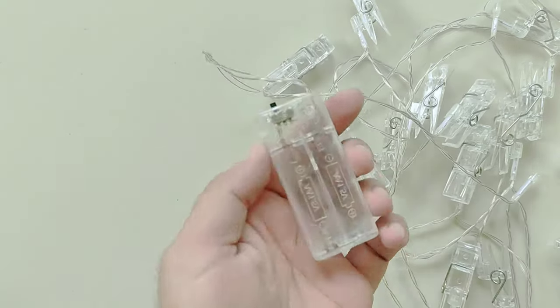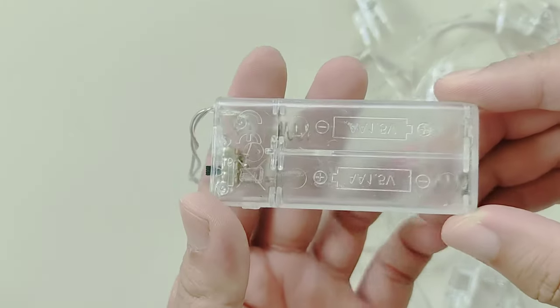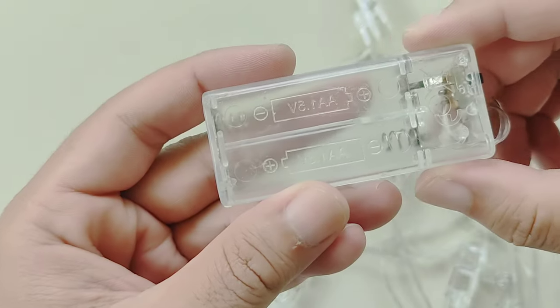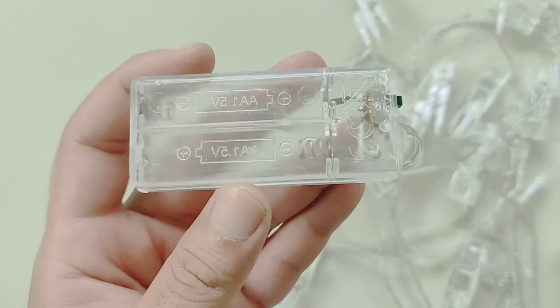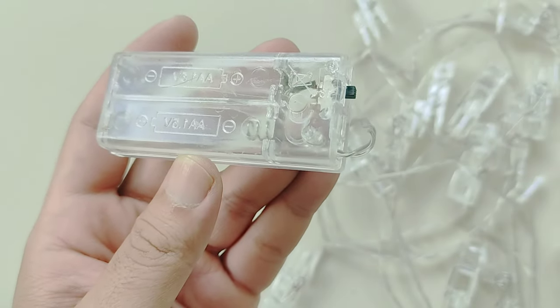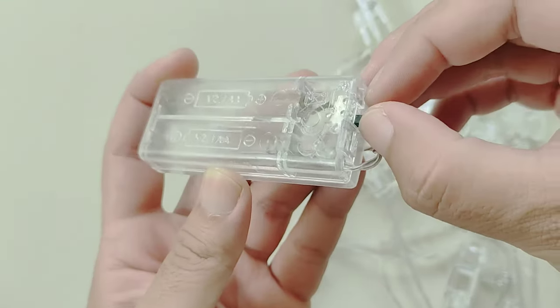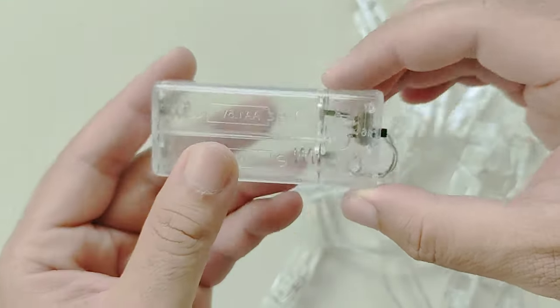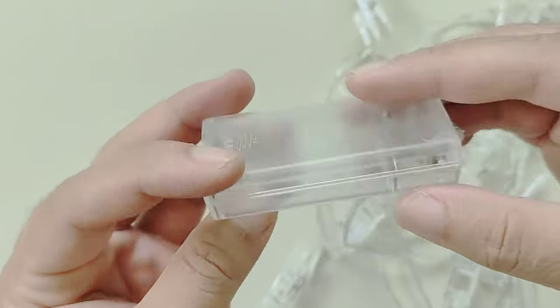What's up everyone, in this video I'm going to modify this LED light string so it can be powered by a USB cable instead of using two double A batteries. I'm doing this because I don't want to keep buying double A batteries. Instead, I can use a power bank or anything with a 5 volt output.